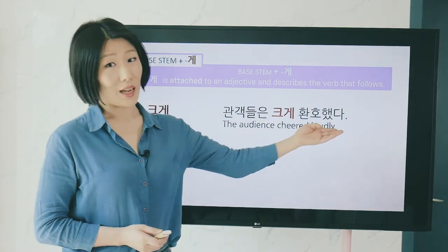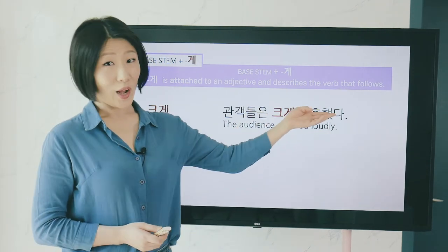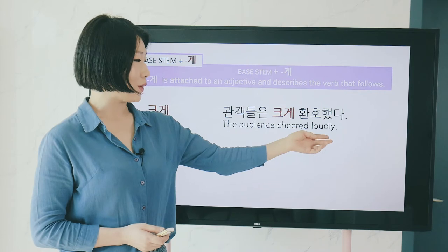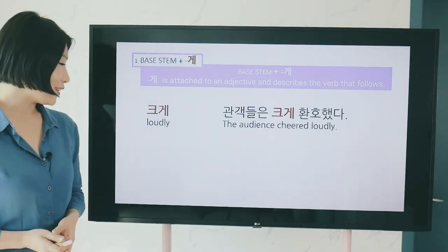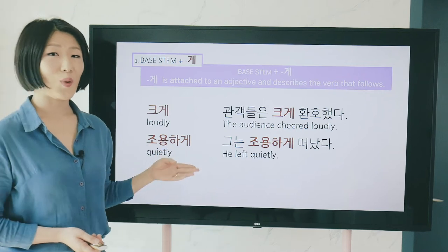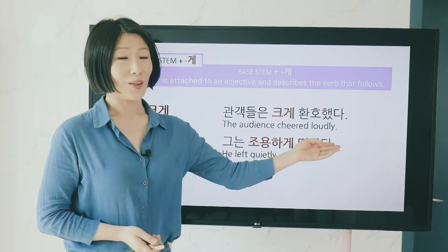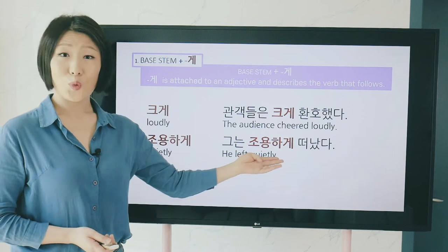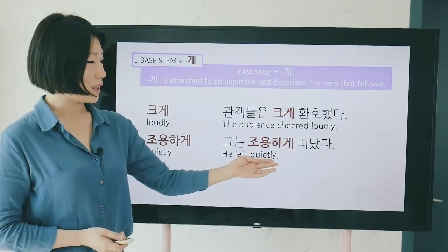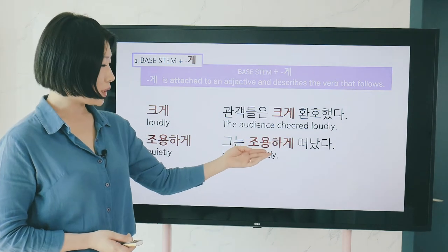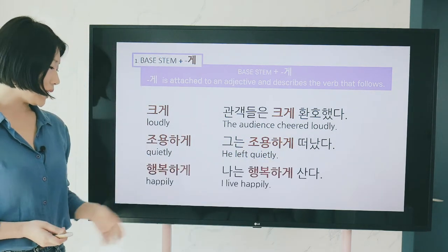Let's look at these in sentences. 크게 means loudly — for example, 'the audience cheered loudly' uses 크게 환호했다. Next, 조용하게 means quietly — 'he left quietly,' though the word order in Korean is different from English.